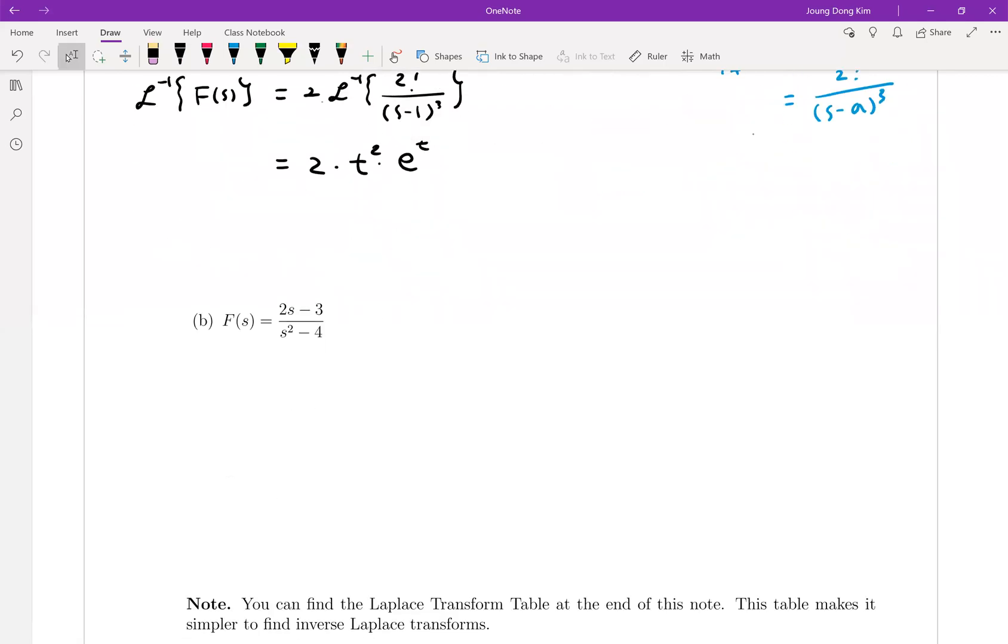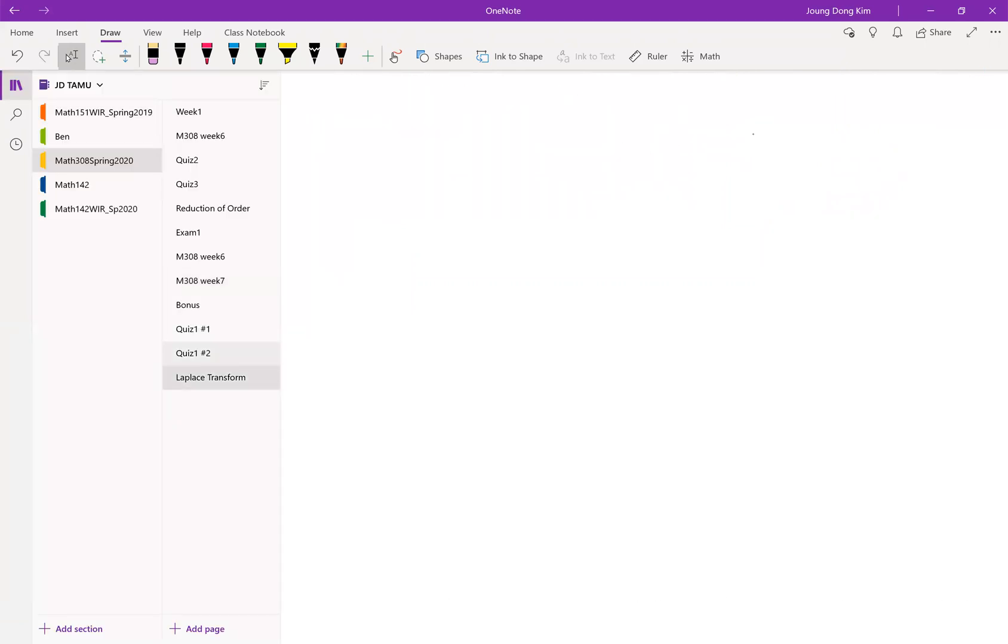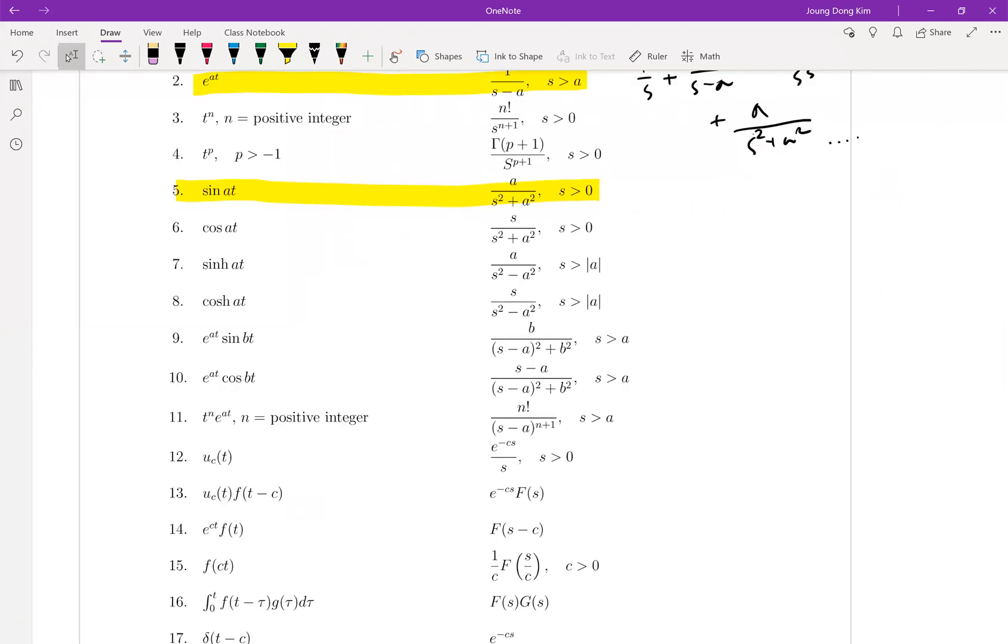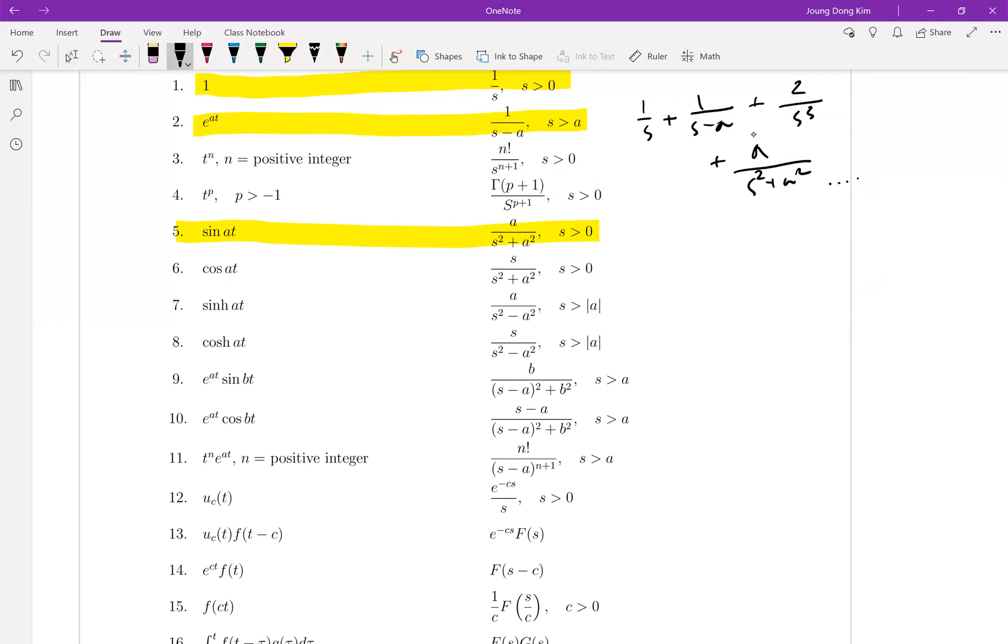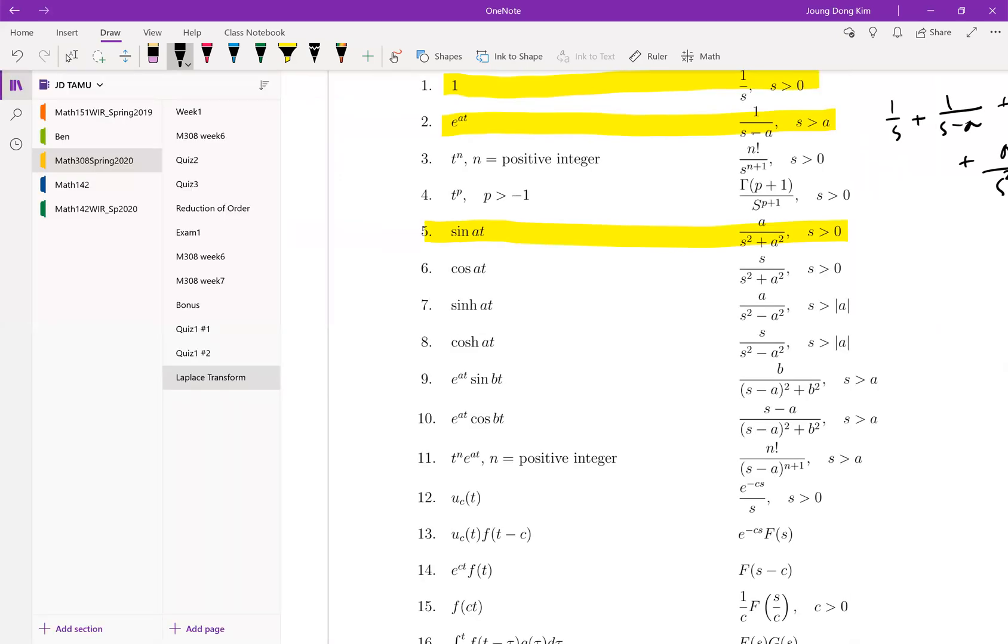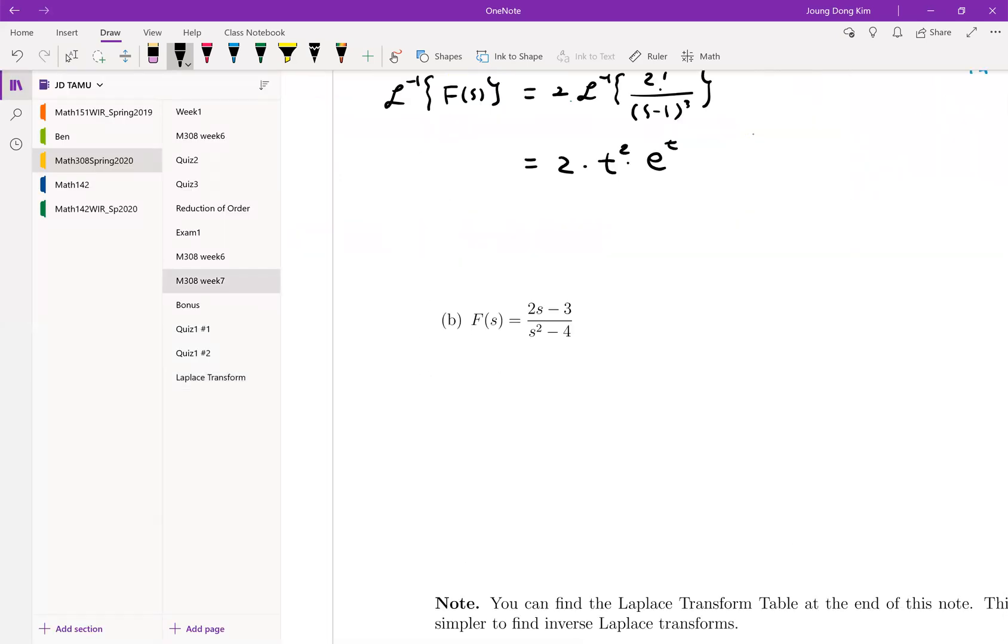So what about part b? It is the same thing, but try to look at the table. Which is matched with that? Like don't look at your numerator because it will be separated. But denominator is s squared minus 4. So I believe number 7 and 8, these are the matching ones. So let me come back.